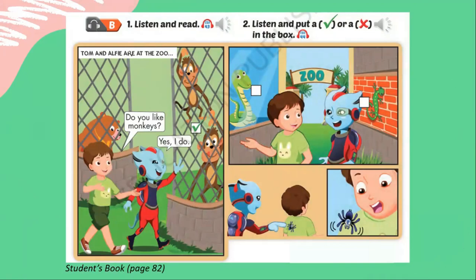Listen and Read. Tom and Alfie are at the zoo. Oh! Look! Look! What animal is that, Tom? It's a monkey! Do you like monkeys, Alfie? Mmm! Yes, I do!